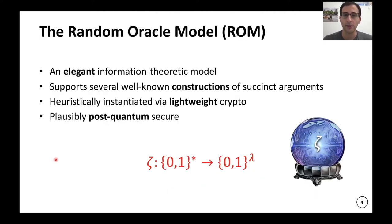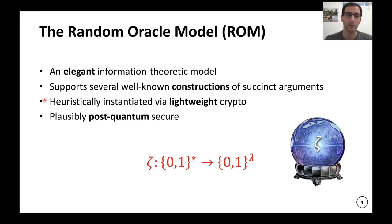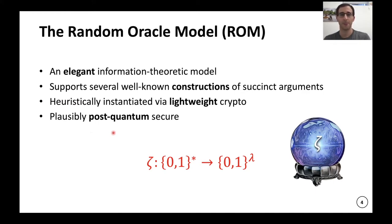Why do we study security of SNARGs in the random oracle model? It's a very elegant information-theoretic model — the questions are more about information and not computational complexity assumptions. And it's not only a nice model; we actually have very elegant constructions in this model. After you take these constructions in the random oracle model, you can heuristically instantiate them using relatively lightweight symmetric crypto. These constructions are also post-quantum secure and do not require any setup.